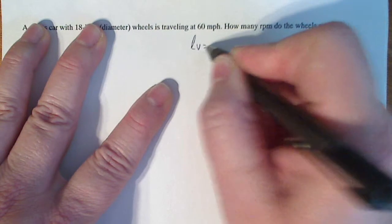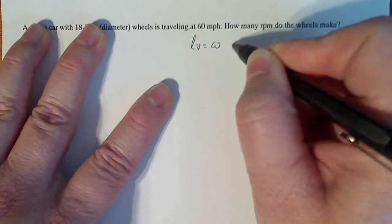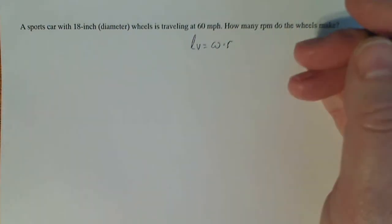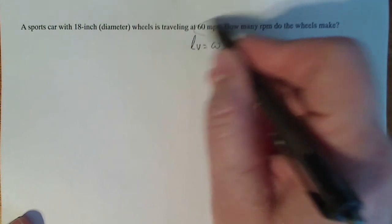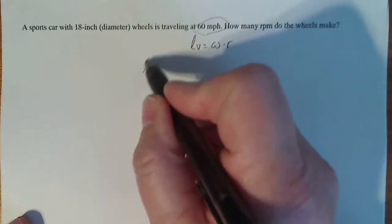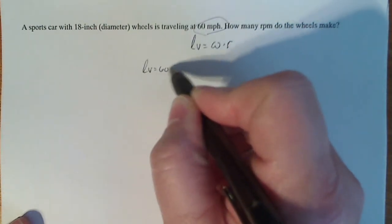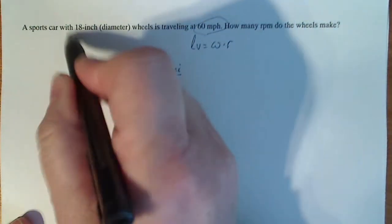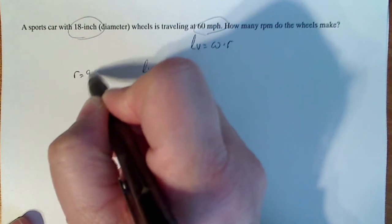The relationships that we have are based on this: linear velocity (I'm just going to call LV) is equal to angular velocity times the radius of the wheel that's turning. So that's the big formula that we have. Now we know given in the problem that our linear velocity is 60 miles per hour and we know that our radius is nine inches.